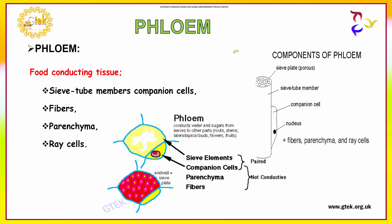Let us talk about phloem. Phloem is a food-conducting tissue. It has sieve tubes, members, companion cells, fibers, parenchyma, and rays. It connects water and sugars from leaves to other parts. Sieve elements and companion cells are paired, but parenchyma and fibers are non-conductive. Here is the sieve plate, this is called sieve tube members, and here the nucleus is presented.